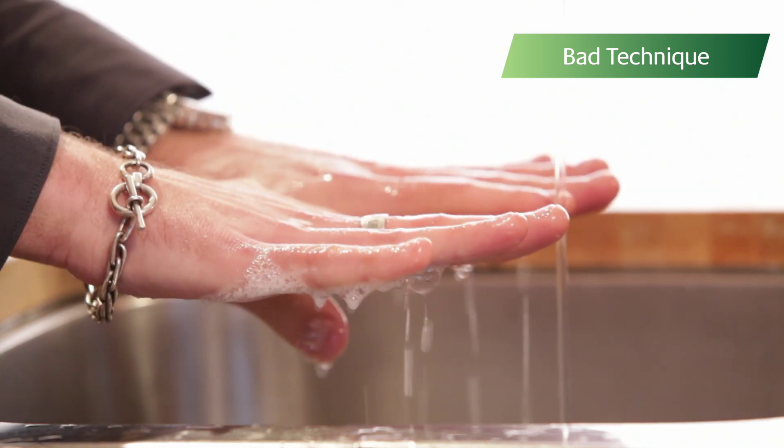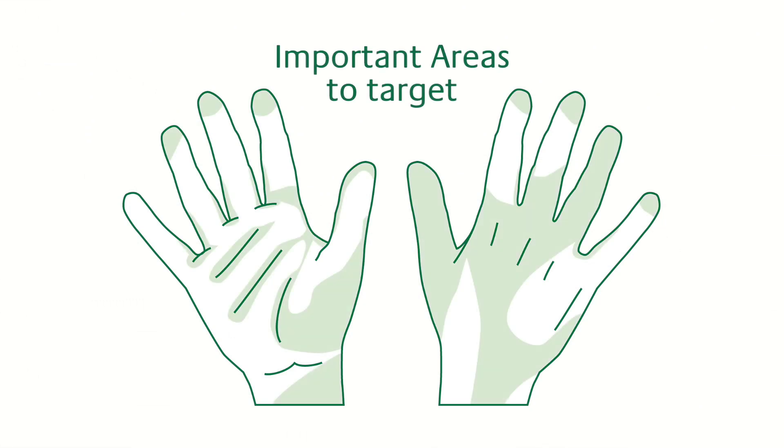And while he did check his hands, he didn't pay special attention to these important areas. These green areas are frequently missed during hand washing, and these orange areas are the most problematic.